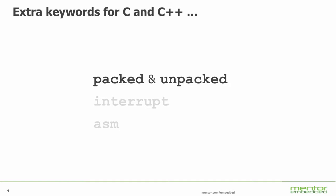Firstly, there is the pair packed and unpacked. These two keywords are applied to data structures and determine how the data structure is laid out in memory. Typically data can be put into memory in such a way that it can be accessed very quickly — in other words, unpacked — which means it is not using memory very efficiently but you can access it very fast. The alternative is packed, meaning the data is compressed in memory and may take a little longer to read. These two keywords enable you to override the memory layout option you've chosen on the compiler.